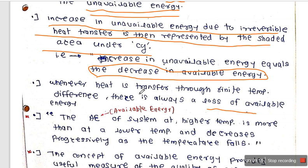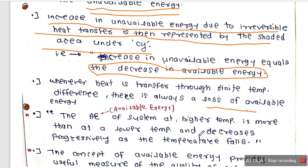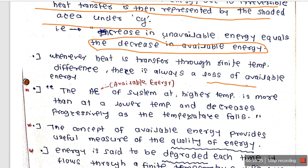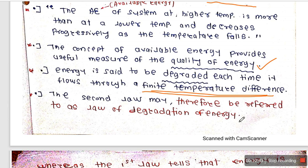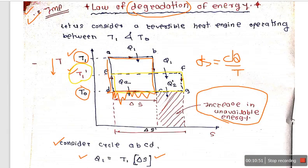Finally, we conclude: if the temperature difference is more, we can extract more energy; if the temperature difference is less, we can extract less energy. The concept of available energy provides a useful measure for the quality of energy. Energy is degraded each time it flows through a finite temperature difference. Therefore, the second law may be referred to as the law of degradation of energy.